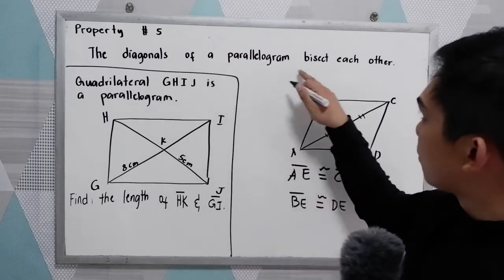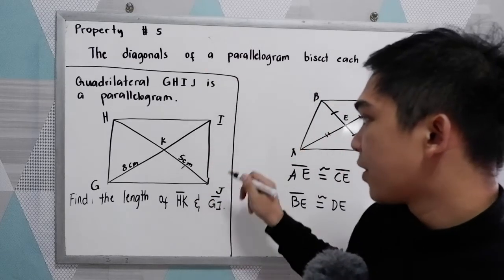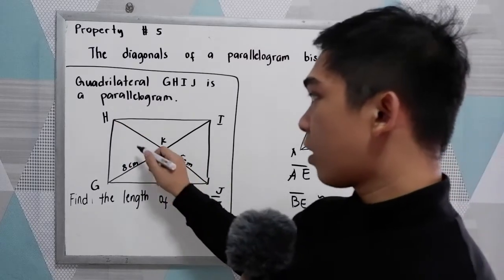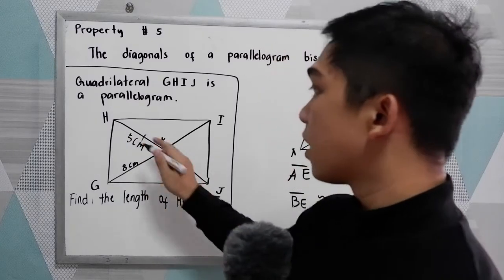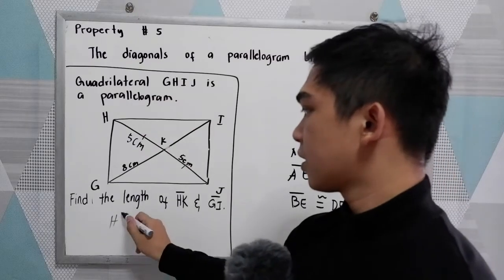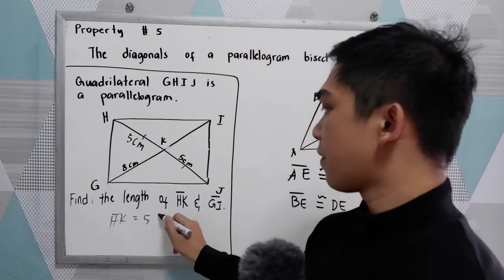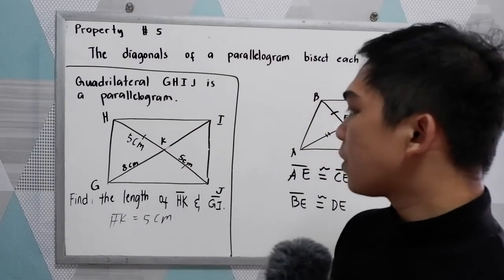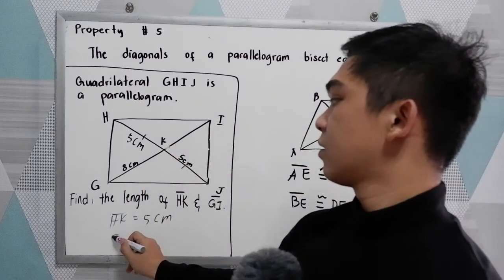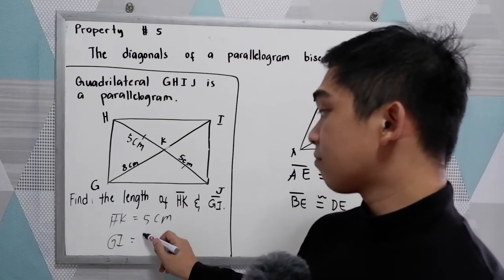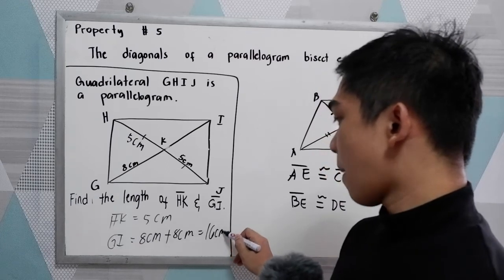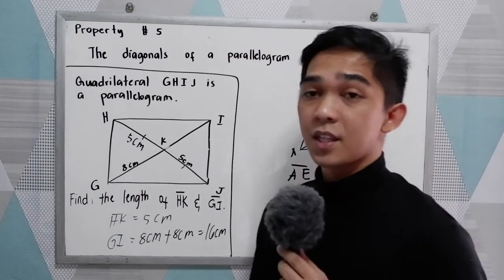Diagonals of a parallelogram bisect each other. So we have here KJ which is 5 cm. HK also measures 5 cm because the two lengths are equal. So HK is 5 cm. Now we're looking for GI. GI is 8 plus 8, so GI is 16 cm. So that is our property number 5.